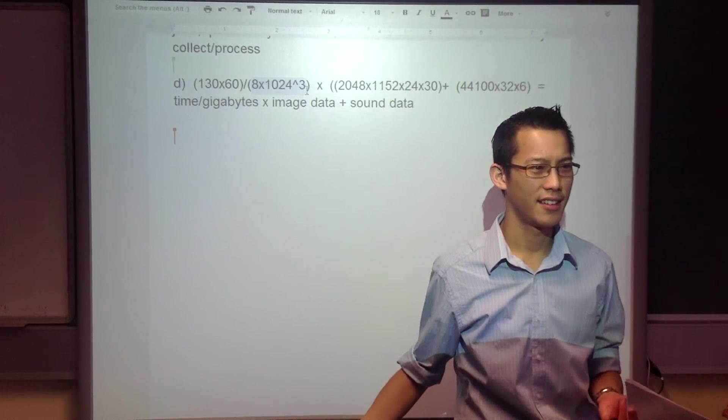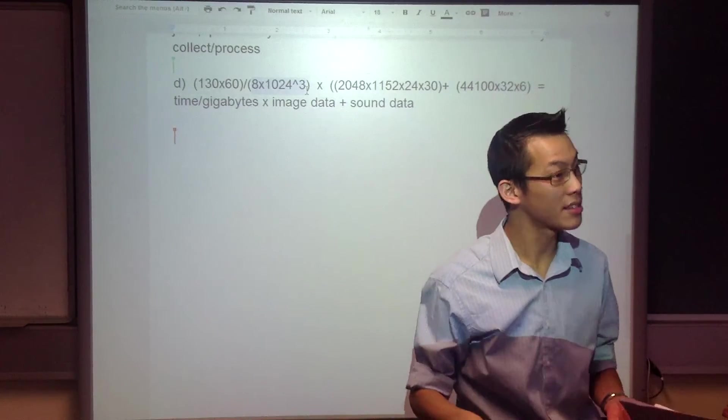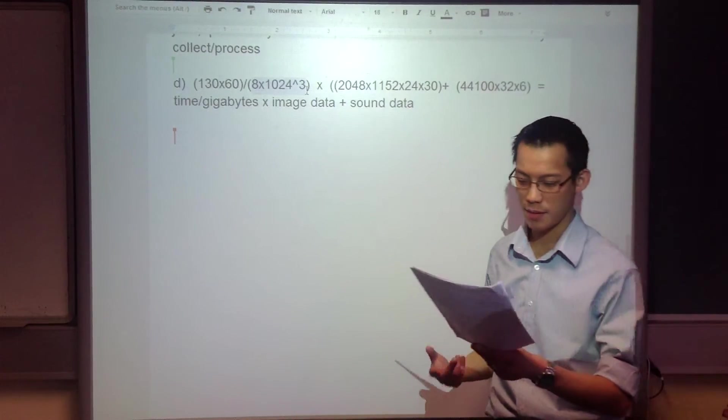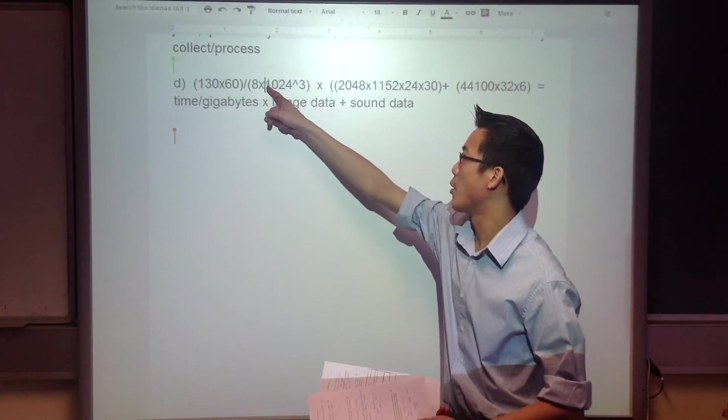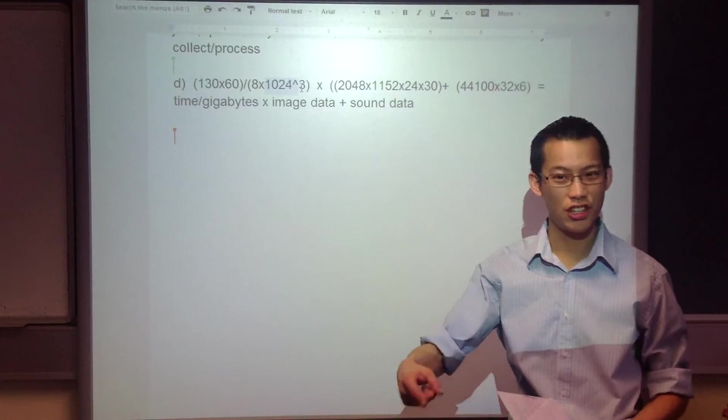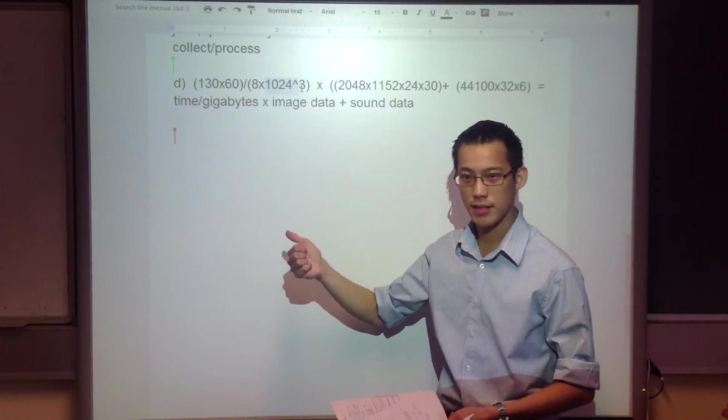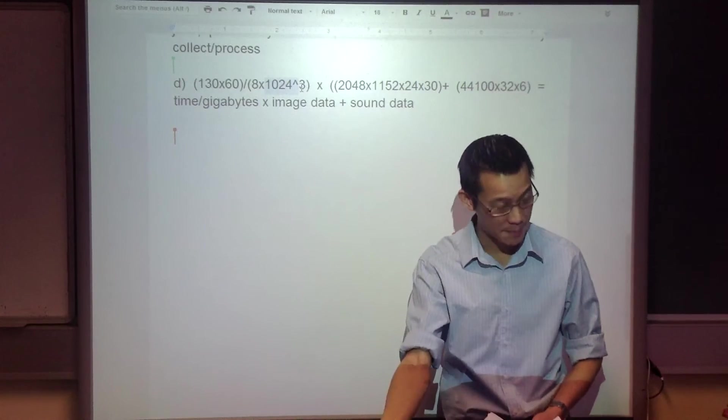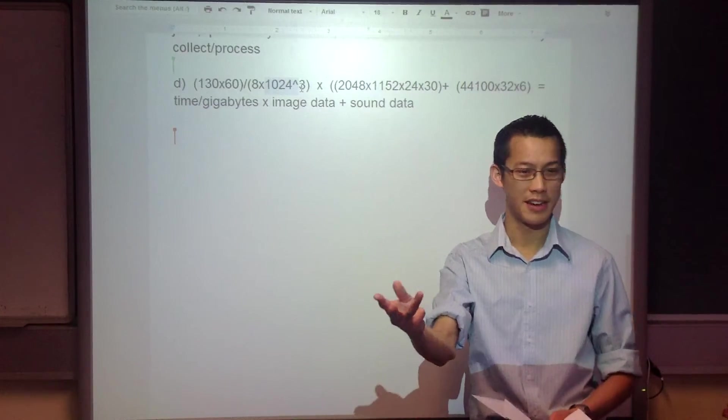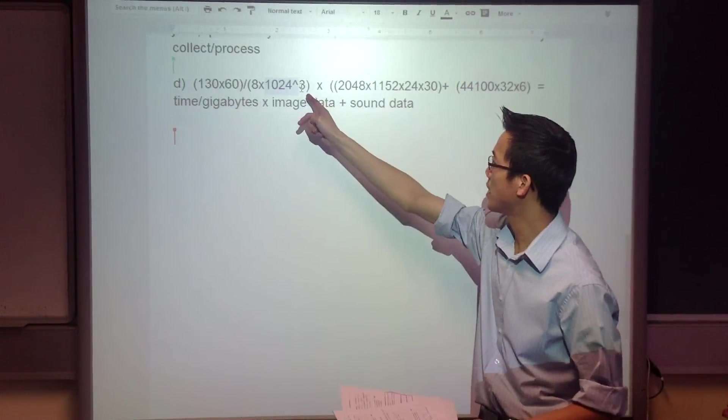Now, what's this business here? The 8 and the 1024 cubed. What's the 8? Bits. Bits into bytes, right? Because you're going to get this in bytes, because it says calculate it in gigabytes. And this 1024, right? I've got to cube it, because I've gone from bytes to kilobytes, to megabytes, to gigabytes, right? So I've got to do it three times. So that's what that's about.